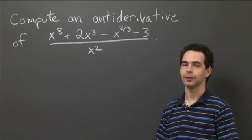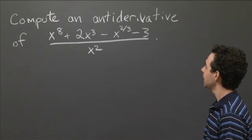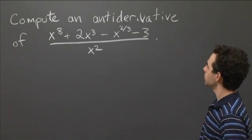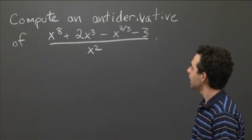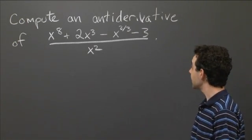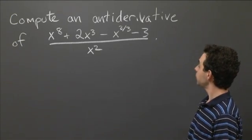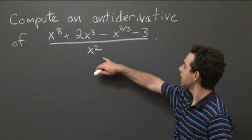So I have here a problem for you, just an exercise about computing an antiderivative. The question is to compute an antiderivative of this big fraction, so on top it's got x to the eighth plus 2x cubed minus x to the 2 thirds minus 3, that whole thing, over x squared.